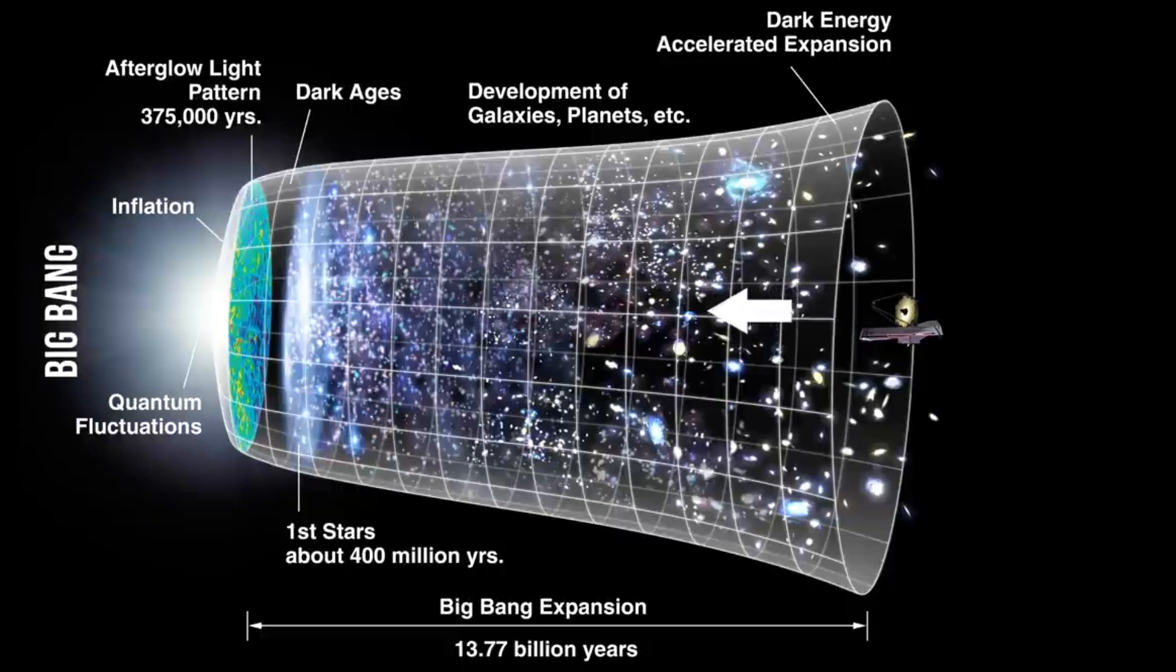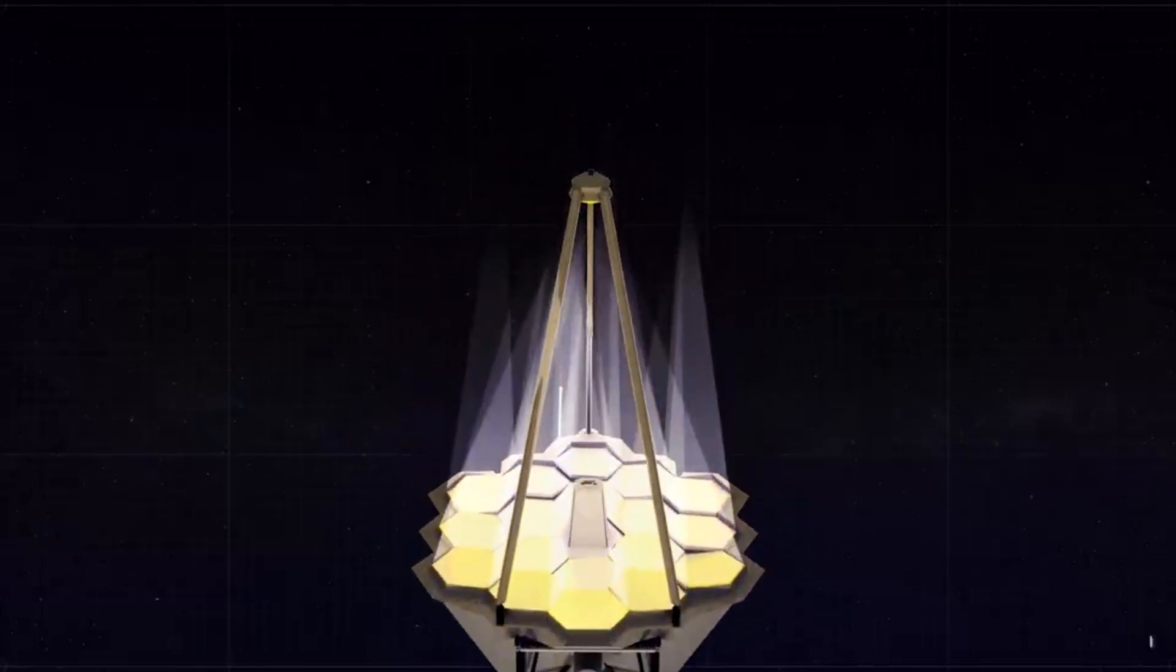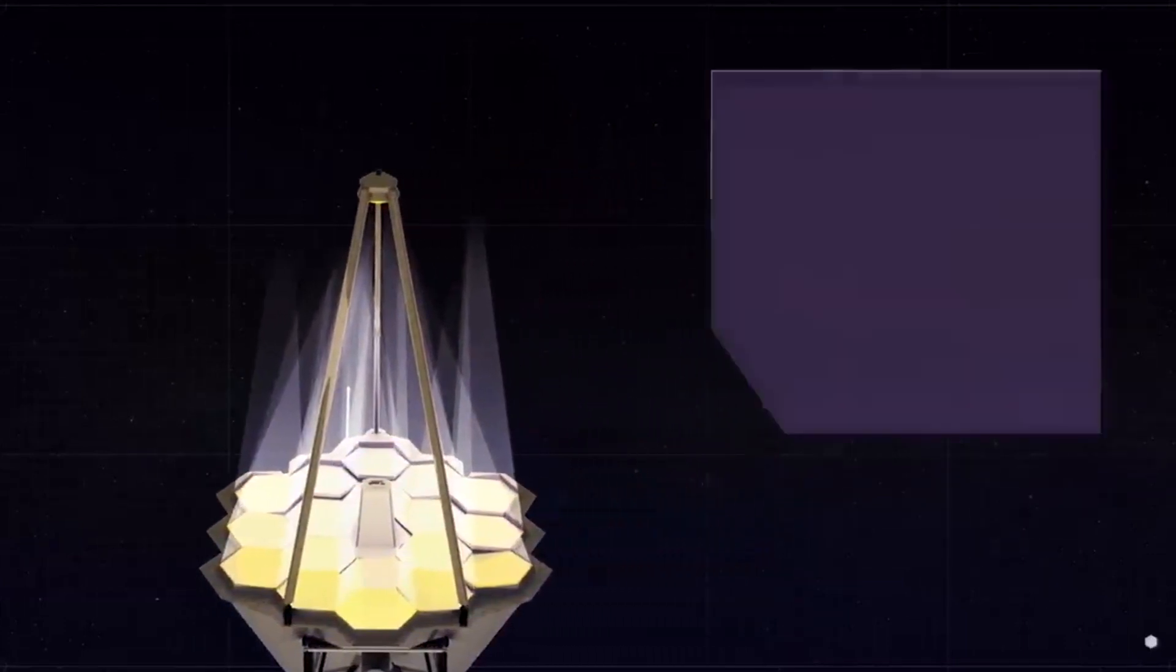The James Webb Space Telescope will go through a series of science and calibration tests, including sunshield deployment, telescope deployment, instrument turn-on, and telescope alignment.